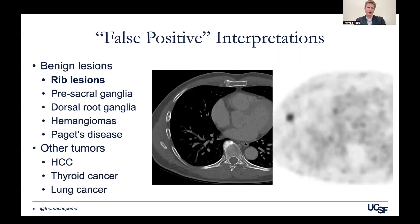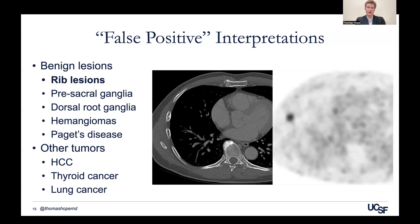One important topic is false positives. PSMA PET is not specific to prostate cancer — a number of lesion types can have uptake. Particularly, rib lesions cause the most problems. If someone at initial staging has a single lesion in the rib, it's nearly 98% likely to be benign, not cancer. You can see a sclerotic rim characteristic of an aneurysmal bone cyst rather than metastatic prostate cancer — but it has good uptake on the PSMA PET. Reader training is critically important: the last thing we want is a patient withheld from definitive therapy because a PET scan is misleading.